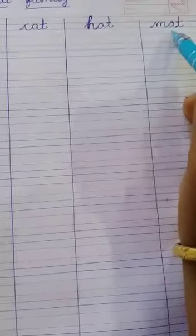Let's read the words. B.A.T. Bat. C.A.T. Cat. H.A.T. Hat. M.A.T. Mat.